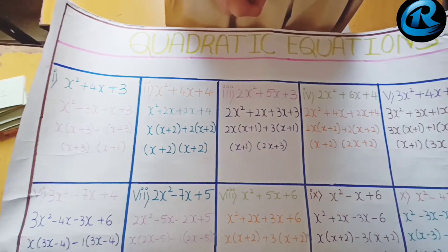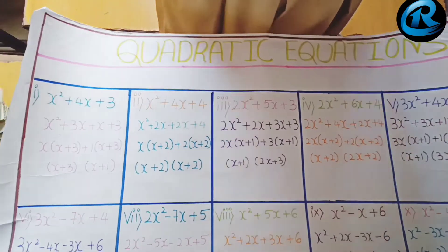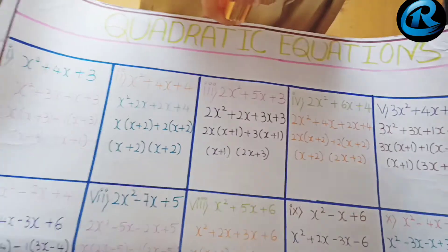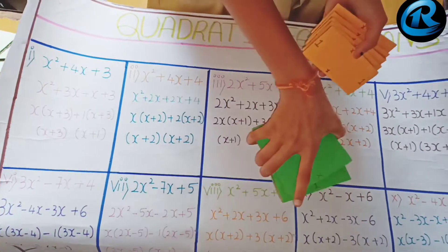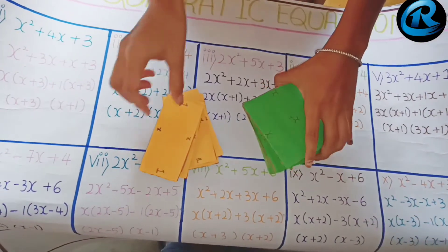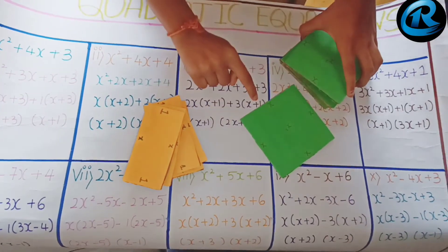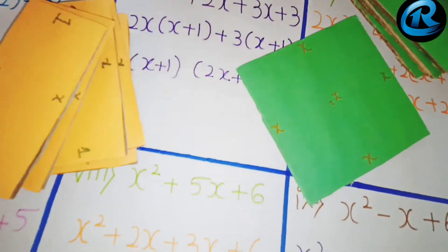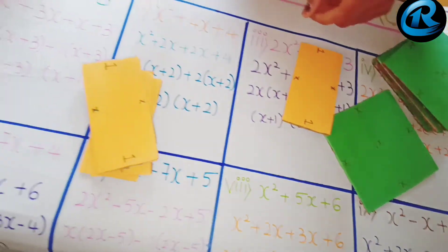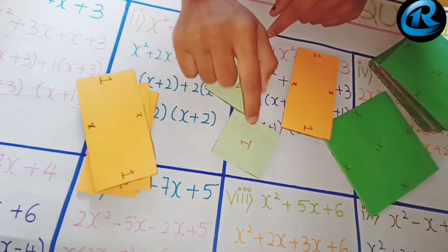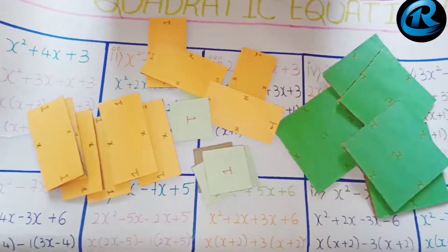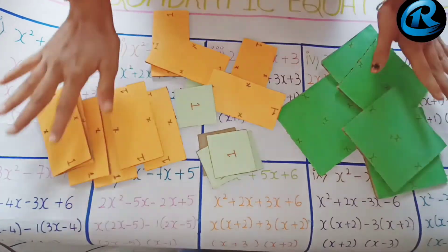Let us now know about the formation of quadratic equations. We need to take cardboard sheets and colorful covers. Cut them into 10×10 centimeters and paste them on the cardboard sheet, then 10×5 centimeters and paste them with another color, and 5×5 centimeters and place them with another color.